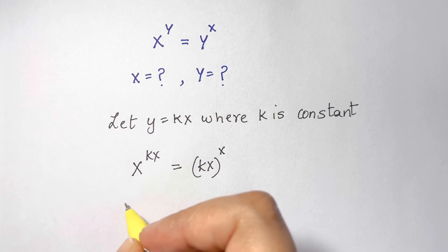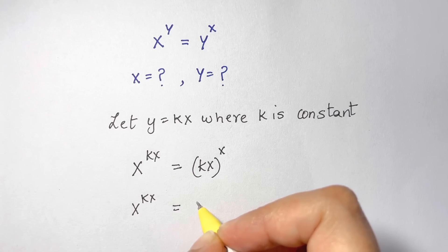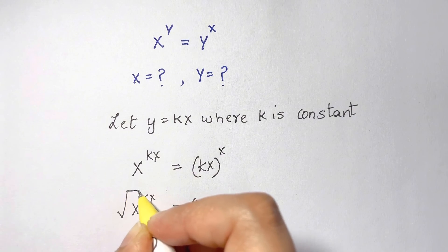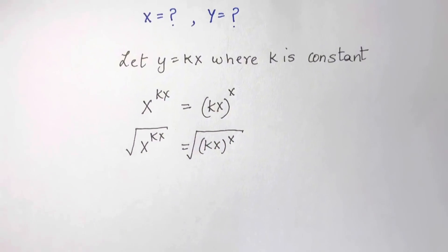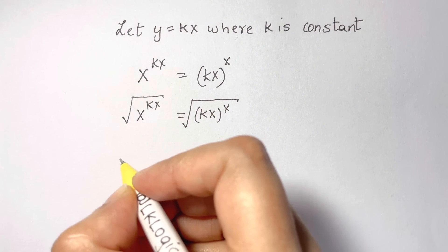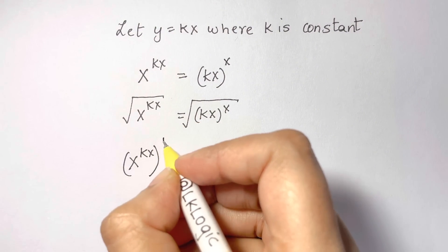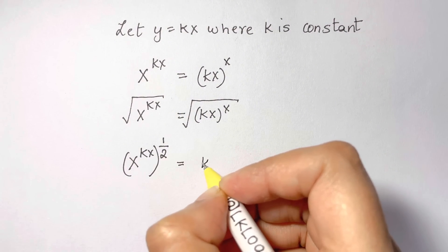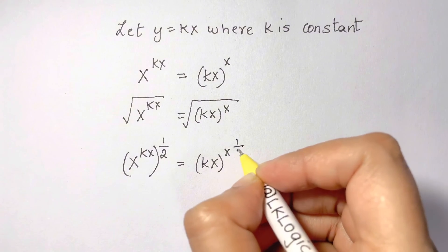Now let's take the square root on both sides. So we have x to the power of kx, which is equal to kx whole to the power of x. Taking the square root on both sides, the exponent 1/2 applies: x to the power of kx whole to the power of 1/2 equals kx whole to the power of x times 1/2.